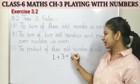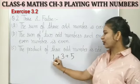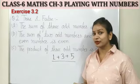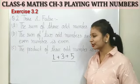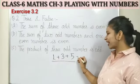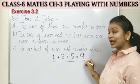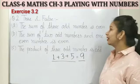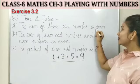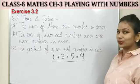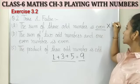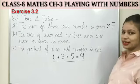We have taken three odd numbers: one, four, and five. So one plus four is five, plus five is nine. Nine is an odd number, but the statement says it is an even number. So it is wrong — it is a false statement.